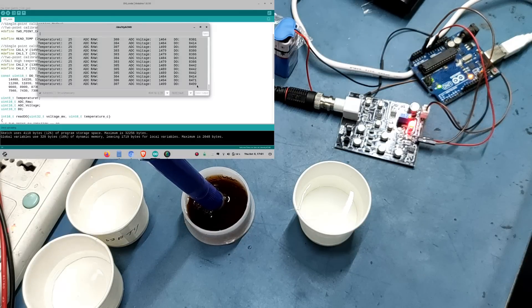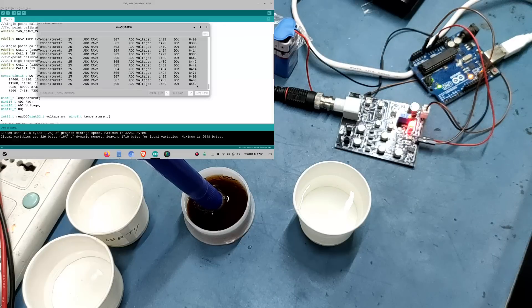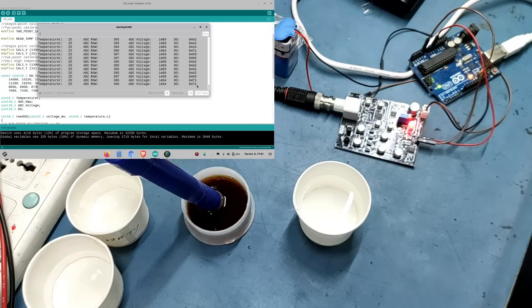For measuring the water quality, you can measure the water pH, turbidity, TDS and temperature as well. You can add pH sensor, turbidity sensor, TDS and temperature sensor to this circuit.